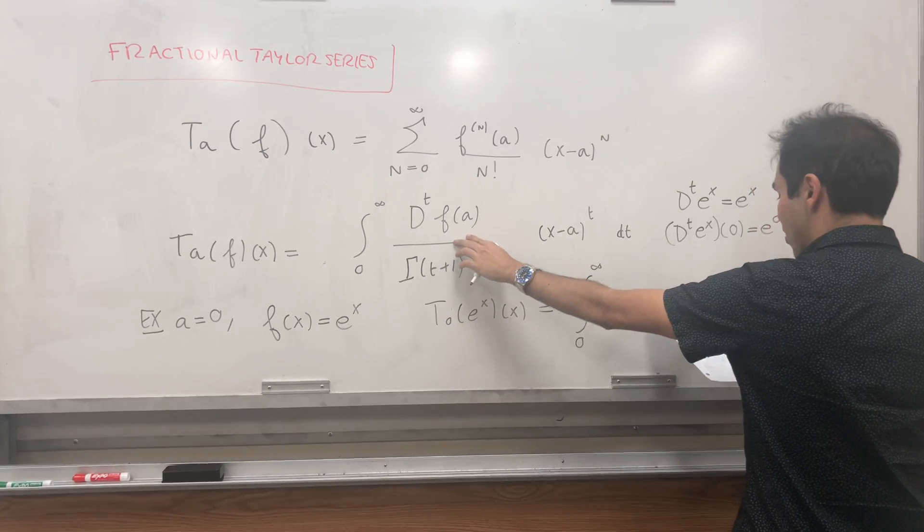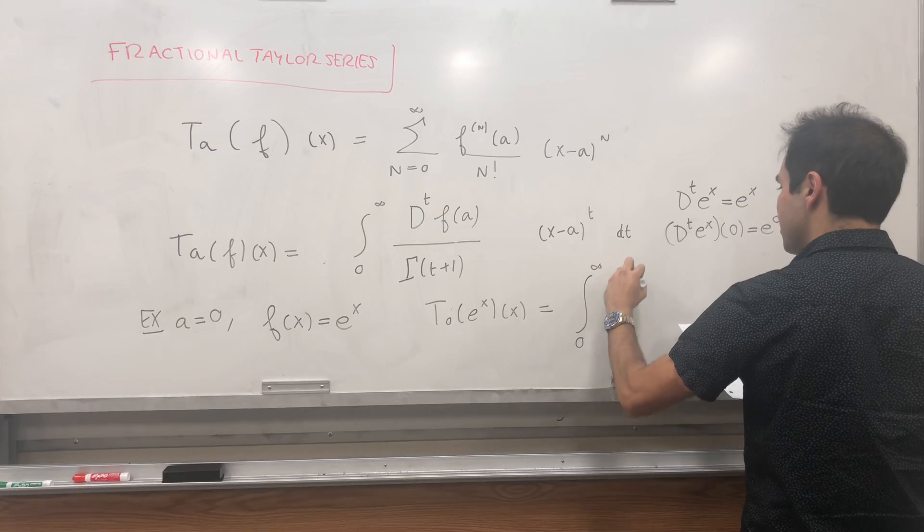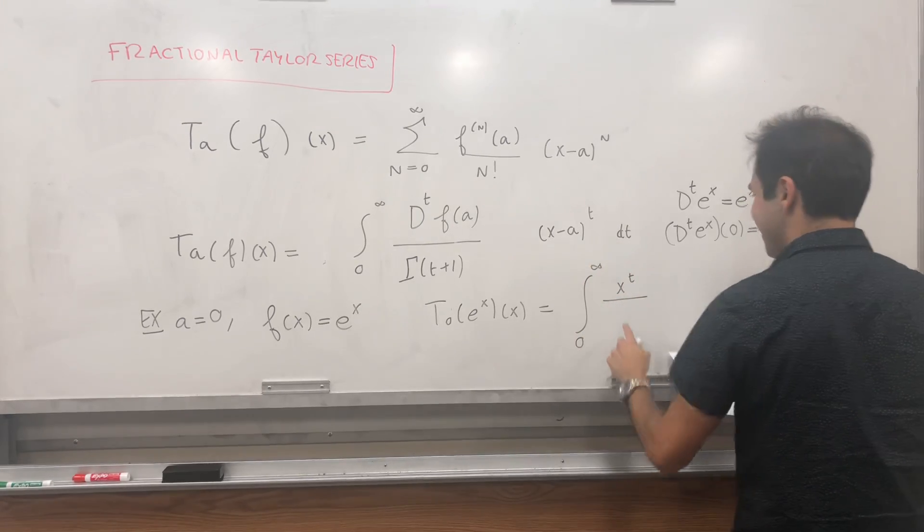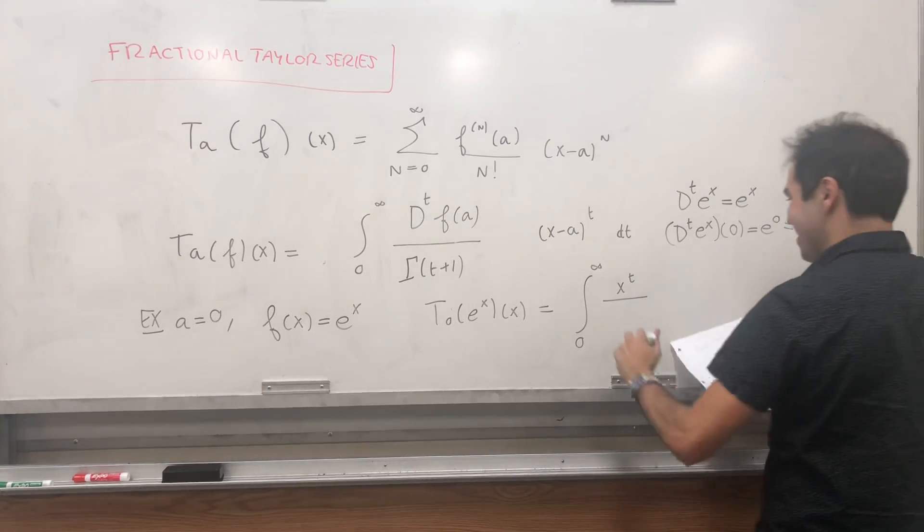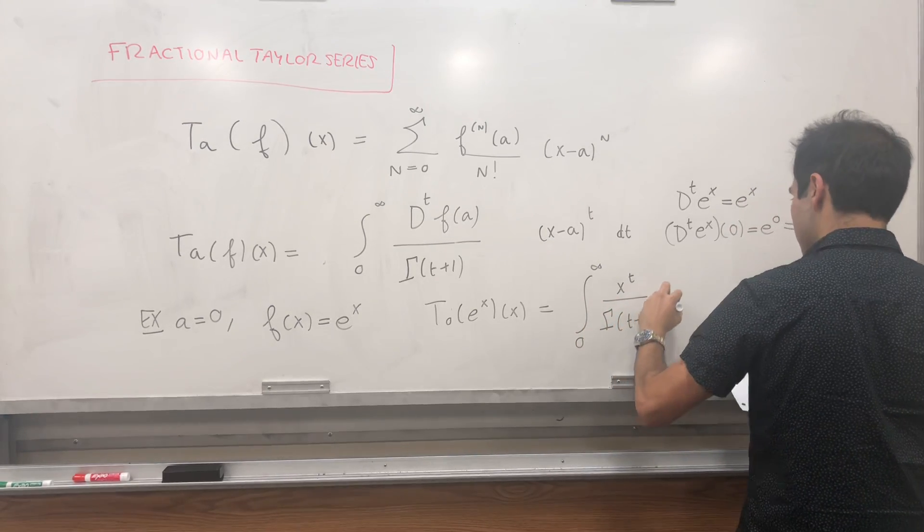So this coefficient is 1. And then we just get x minus 0 to the t. So x to the t. And gamma of t plus 1, dt. It's exciting.